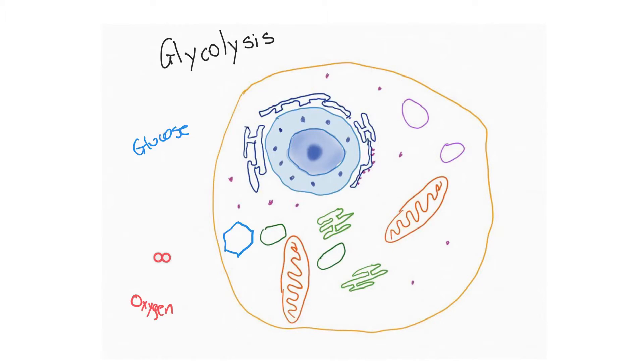In glycolysis, the glucose molecule breaks into two parts. You can almost imagine them as half of the hexagon there. Each of those molecules is now called a pyruvate molecule.